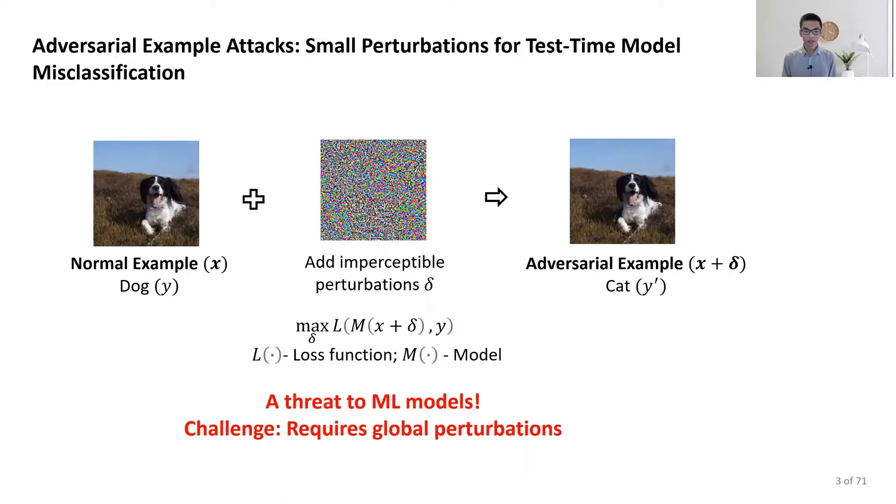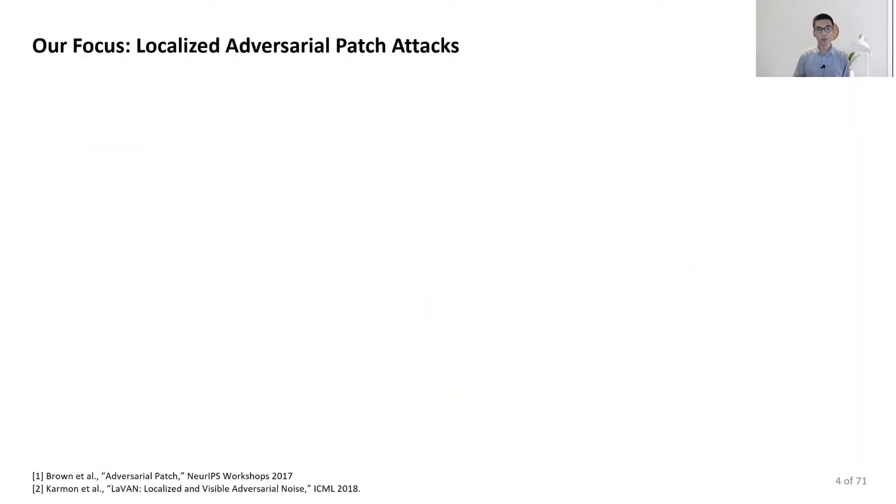However, this attack requires perturbing the entire image, which might be infeasible in some real-world applications. In this paper, we focused on a variant called localized adversarial patch. The idea is to put all perturbations within one local region to generate a patch, and we allow the patch pixels to take any values.